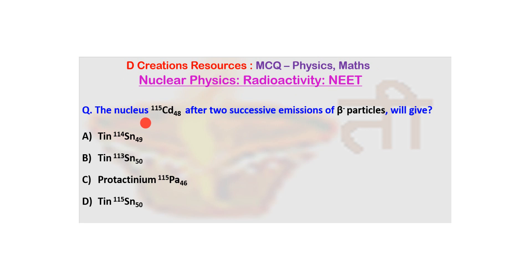So the question is: the nucleus cadmium 115-48 after 2 successive emissions of β particles will give, and there are 4 options. Option A is tin 114, Sn 49.